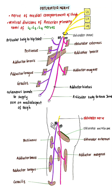Obturator nerve — it is the nerve of the medial compartment of the thigh, that is the adductor compartment of the thigh. It arises from the ventral divisions of the anterior primary rami of L2, L3, L4 spinal roots.